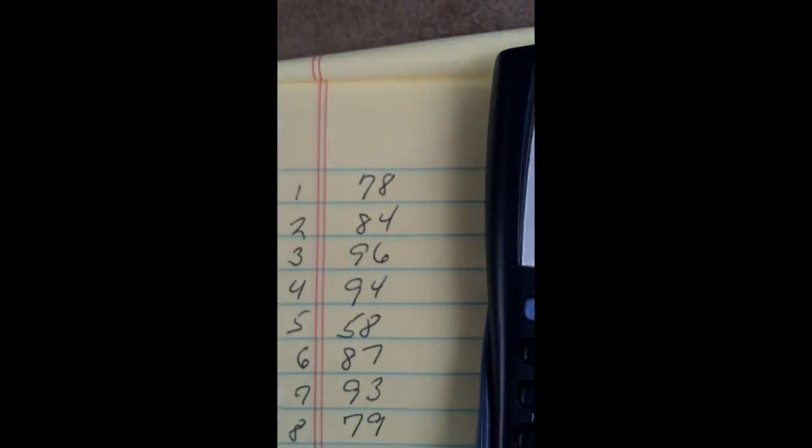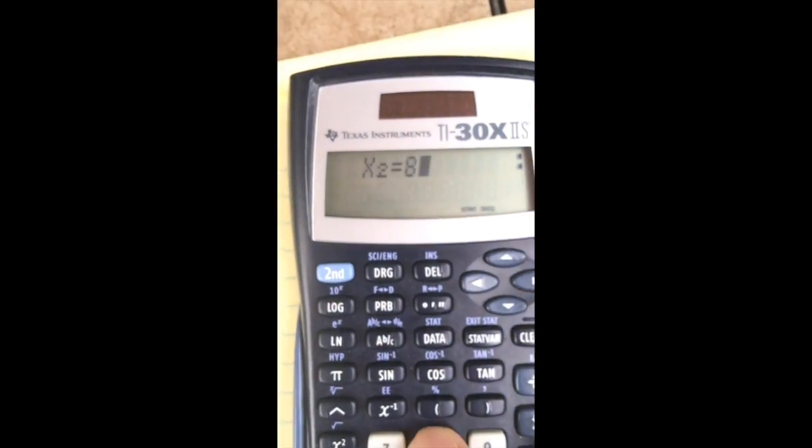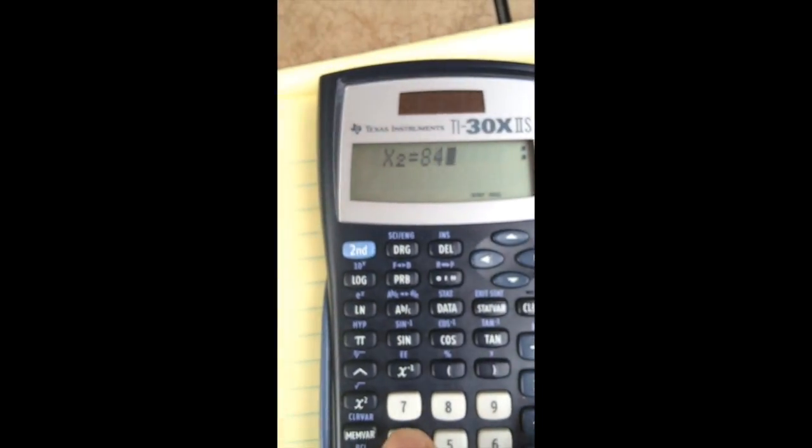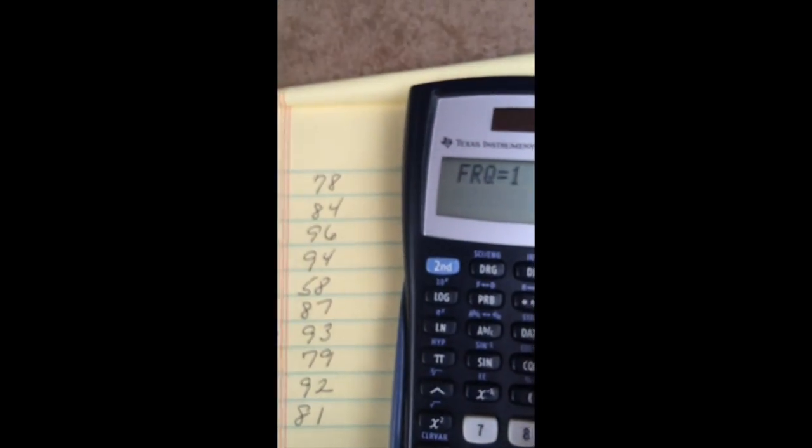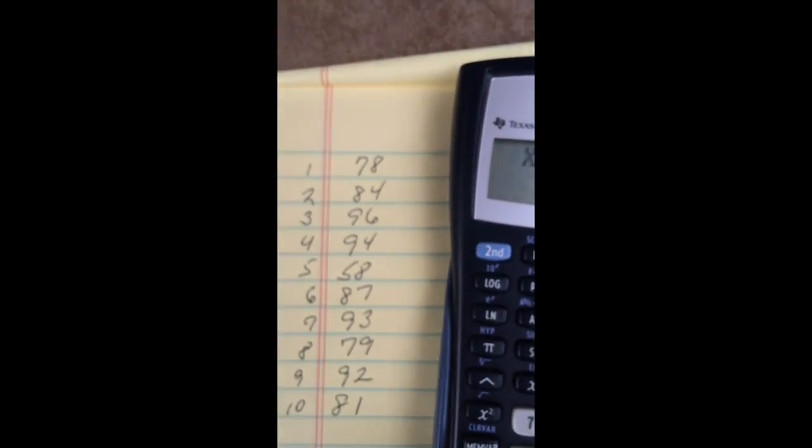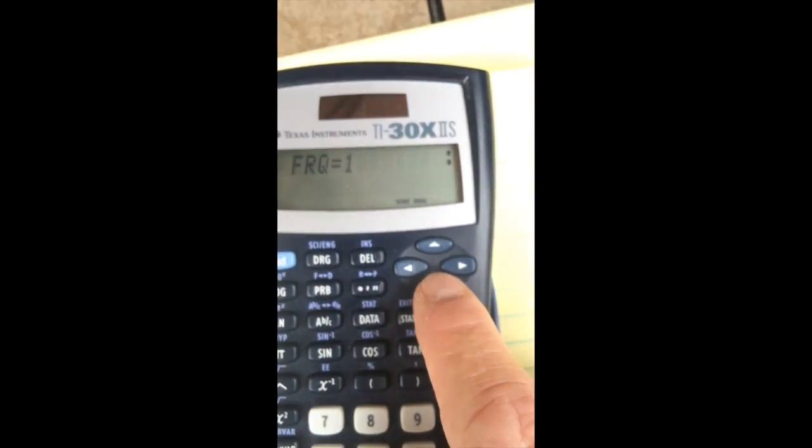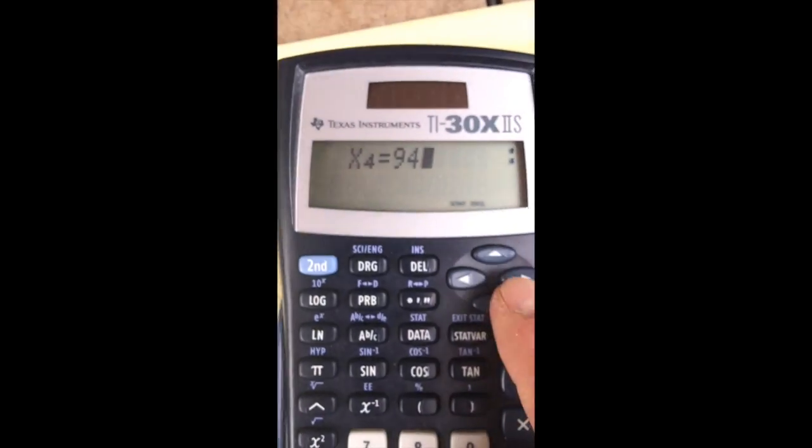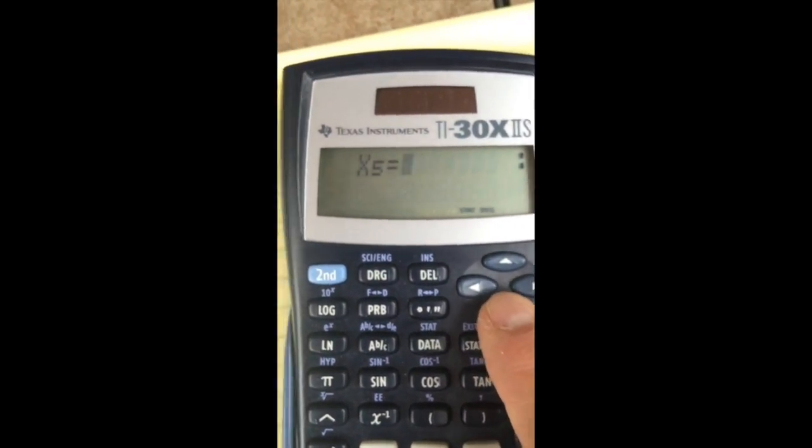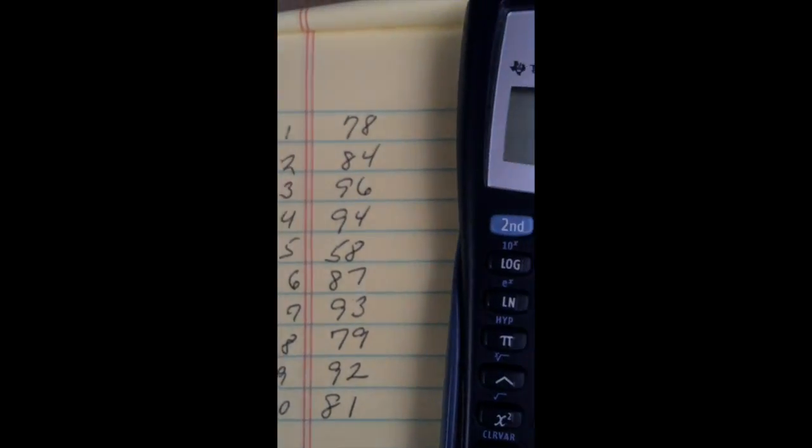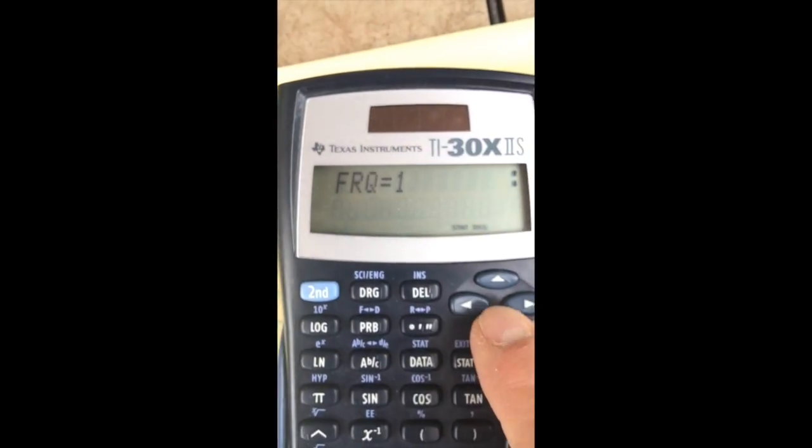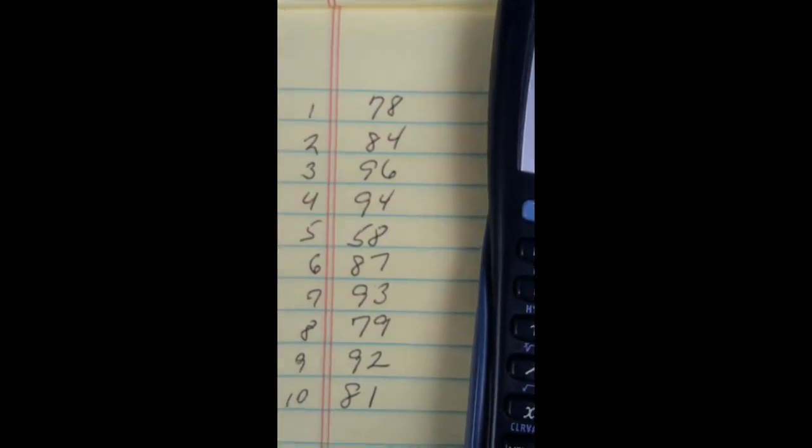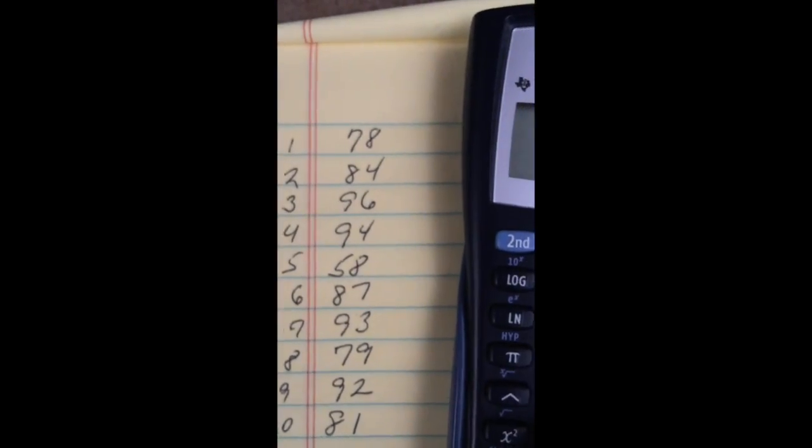My second number is 84, down arrow, frequency 1. The third is 96, down arrow. The fourth is 94, down arrow. The fifth is 58, down arrow.